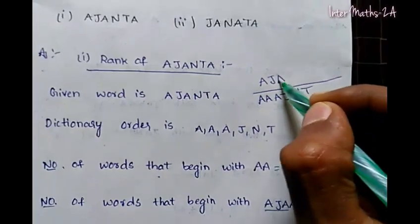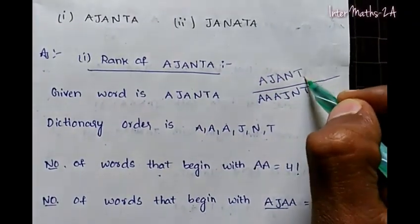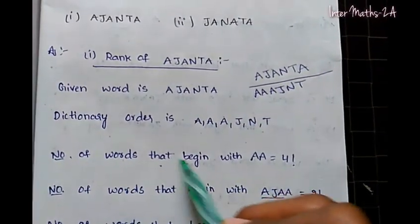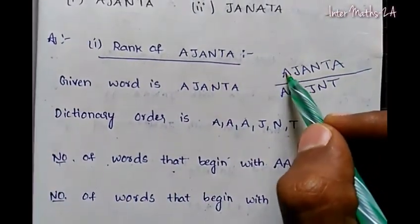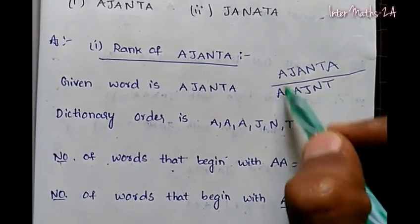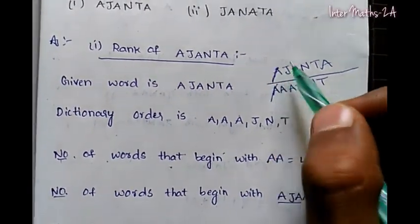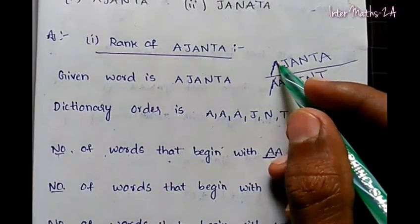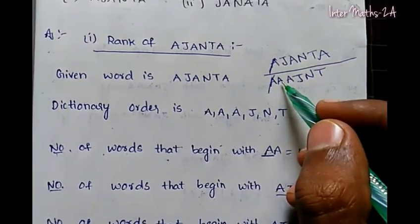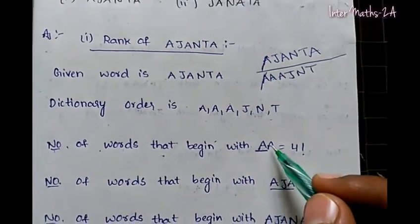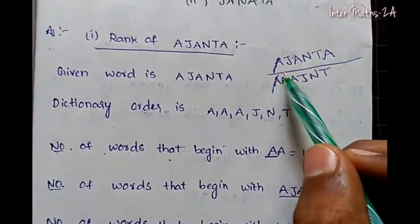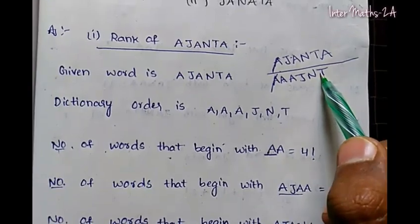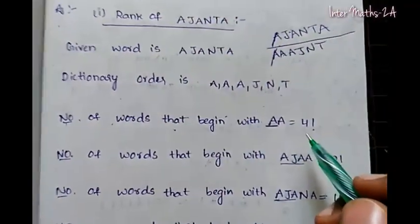We write the word and look at the first letter. The first letter of AJANTA is A. We fix A in the first position and count how many letters remain. We have 1, 2, 3, 4 — four remaining letters, so we get 4 factorial words.